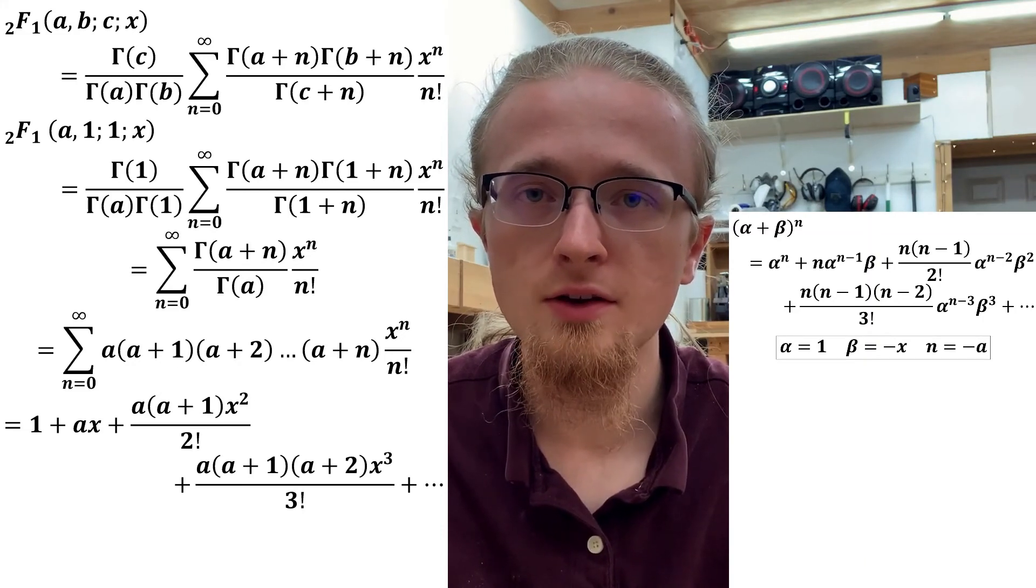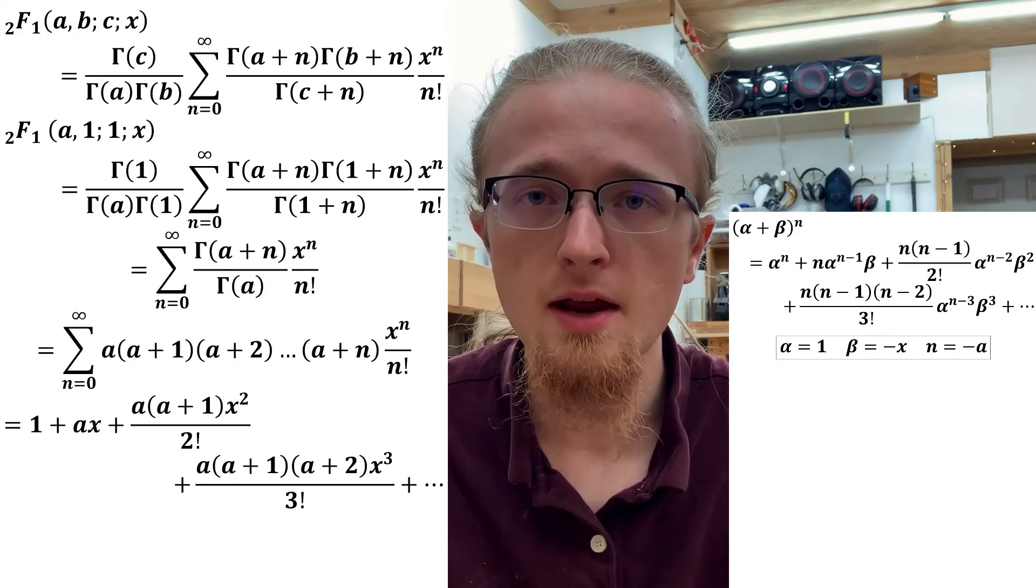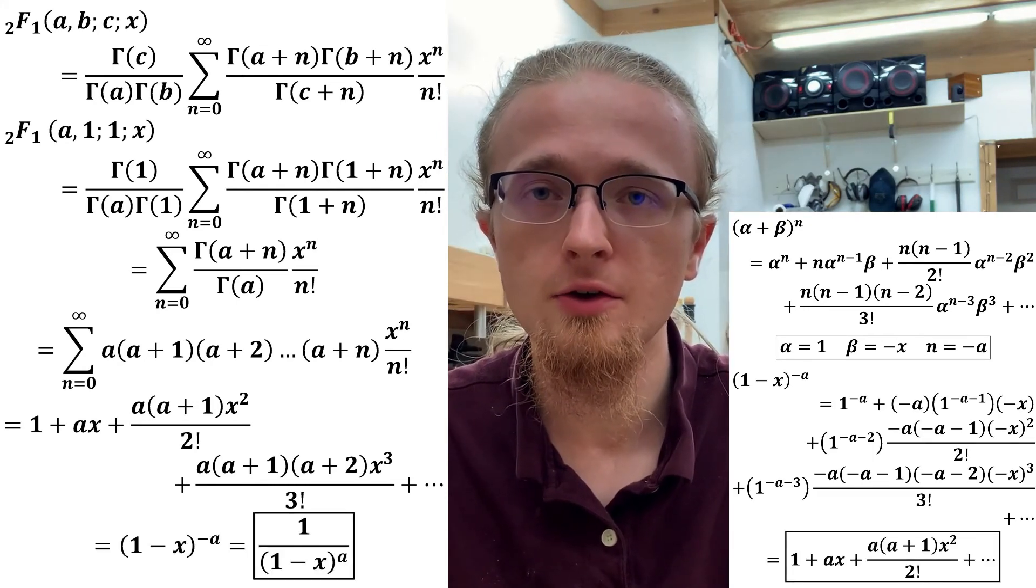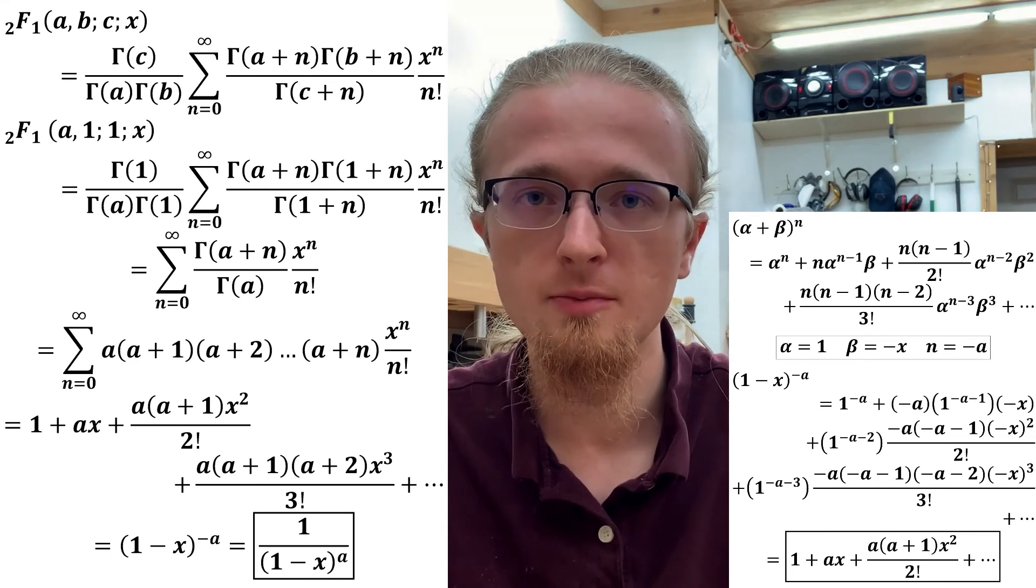If alpha is taken to be 1, beta is taken to be negative x, and n is taken to be negative a, then we arrive at this expression, which, upon simplification, reduces to exactly the series we had for the desired hypergeometric function.